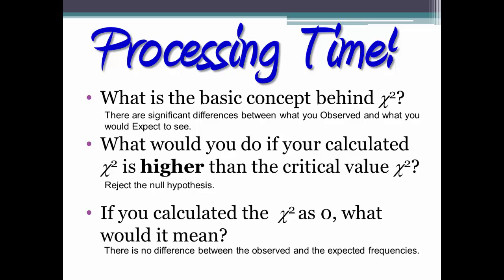Now you understand the difference between the observed and expected frequencies and know how to calculate a one-variable chi-square. But what if you were interested in knowing if men have a different learning style than women? Now you have two variables — learning style and sex — so you'll have to learn to calculate a two-variable chi-square. But that's a topic for another video.